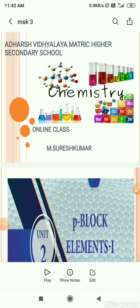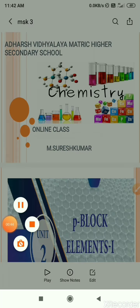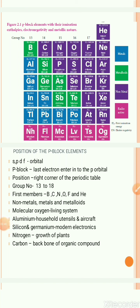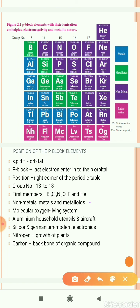What is meant by P-Block elements? The elements in which the last electron entered into the P-orbital are called P-Block elements. They are placed in group number 13 to 18 of the modern periodic table. The first members are boron, carbon, nitrogen, oxygen, fluorine and helium. This block contains non-metals, metals and metalloids.